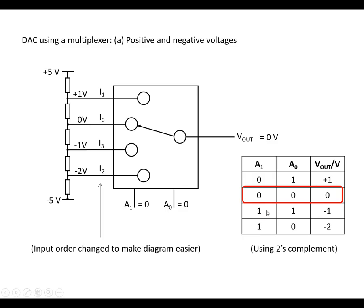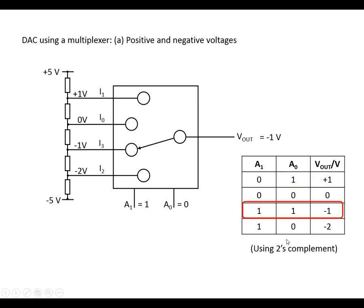And 2's complement giving us 1, 1 for minus 1 volt. And we can see that changing the address just changes how many volts we get out of our system here.